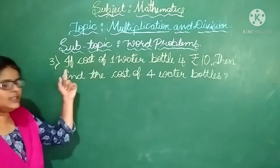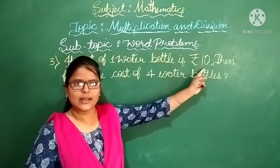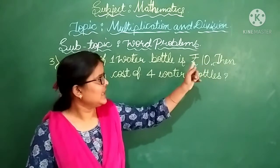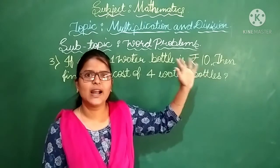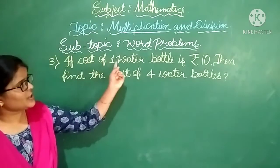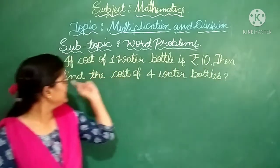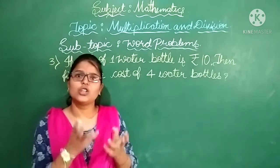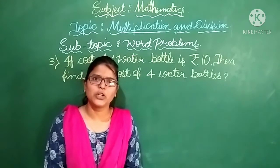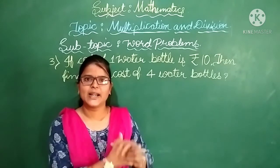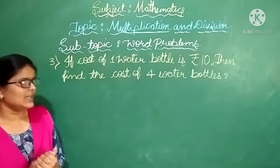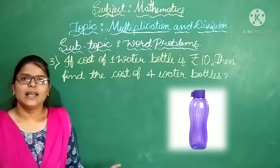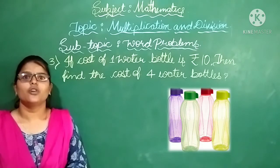Third example: if the cost of 1 water bottle is rupees 10, find the cost of 4 water bottles. This rupee symbol will come in detail in your next lesson on money. Can you see the water bottle on the board? 1 water bottle costs 10 rupees, so 4 water bottles cost 40 rupees. Let us see how to solve this.